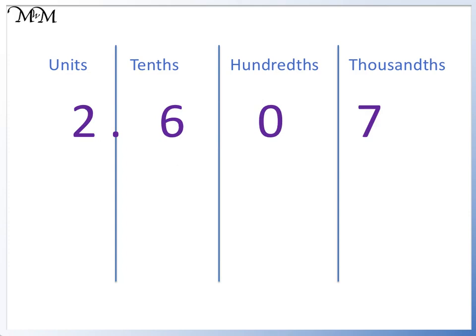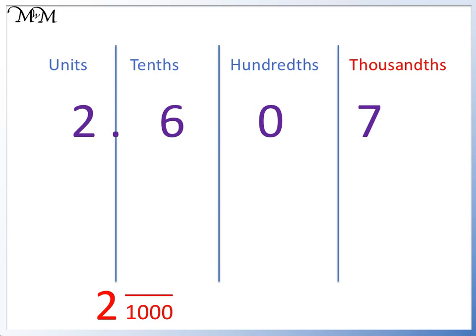2.607. The whole number is 2, so we can write that down. The decimal number finishes in the thousandths column, so the denominator is 1,000. Now we can simply read the number after the decimal point. This is 607, so we have 607 thousandths. Our answer is 2 and 607 thousandths.